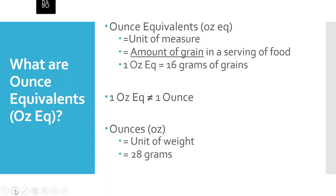Ounce equivalents are a unit of measure that tell you the amount of grain in a serving of food. Don't let the name confuse you — an ounce and an ounce equivalent are not the same thing. An ounce is a unit of weight equal to 28 grams, but an ounce equivalent is a unit of measure that tells you the amount of grain in a serving of food. In fact, one ounce equivalent is equal to 16 grams of grains. A one ounce equivalent serving of grains does not necessarily weigh one ounce — sometimes it does and sometimes it doesn't, depending on the type of grain food.